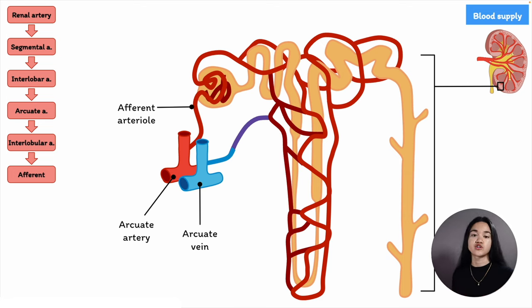The efferent arteriole, carrying blood away from the glomerulus, forms a capillary network around the renal tubules — the peritubular capillaries and vasa recta — before returning to the venous system. From the peritubular capillaries, blood drains into the interlobular vein, then into an arcuate vein, then into the interlobar vein, coming down the renal columns and draining into the renal vein, which goes into the inferior vena cava. It's essentially the reverse pathway of the arterial supply, but with veins.